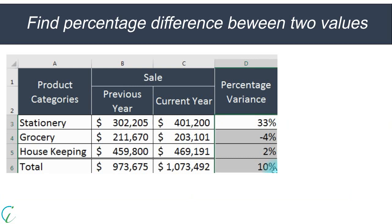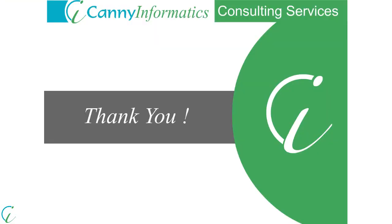We can observe that the sale of stationery increased by 33% and grocery sale decreased by 4% — ask your sales team to pull their socks up. Housekeeping category sales increased by a nominal 2%, so the sales team also needs to work hard there. Thank you Martha for such an easy explanation.